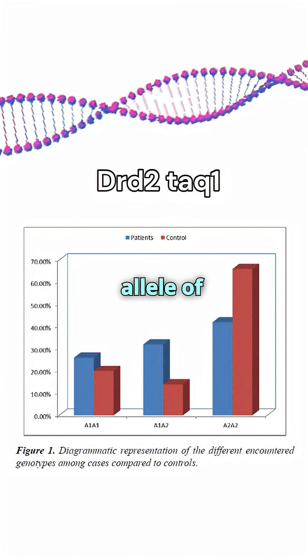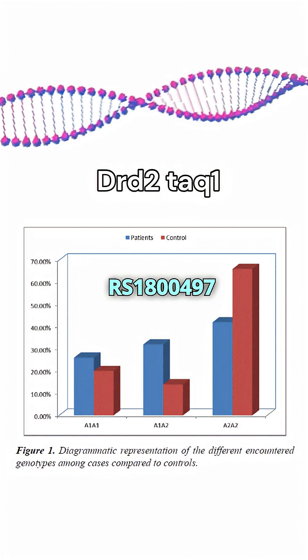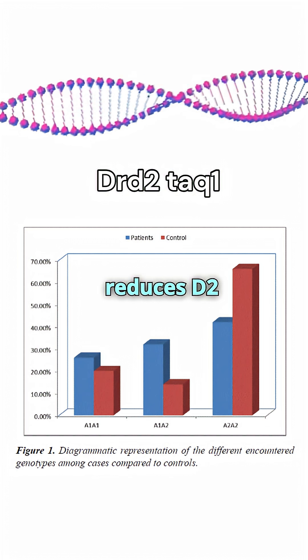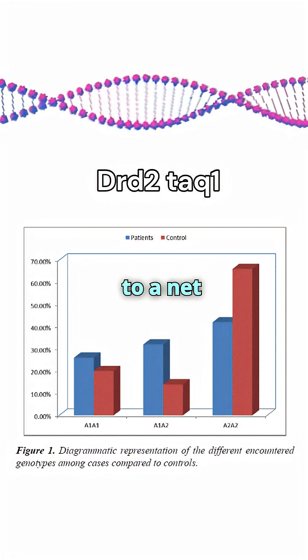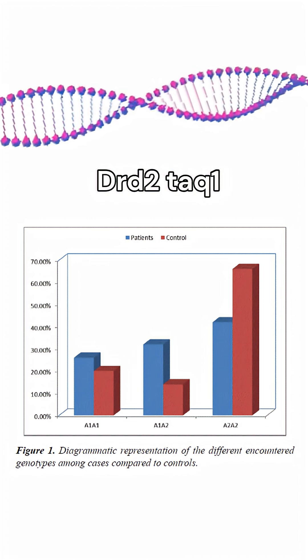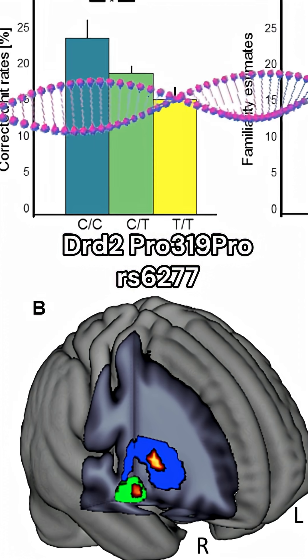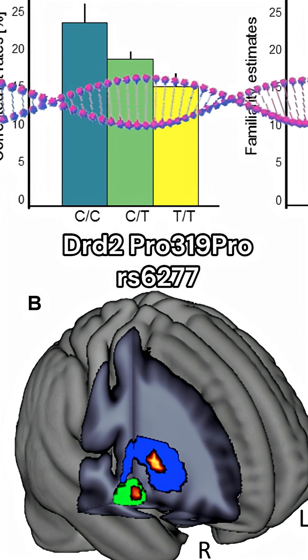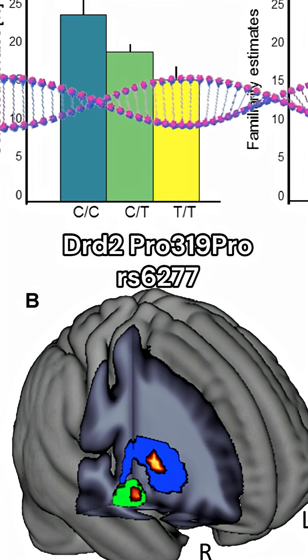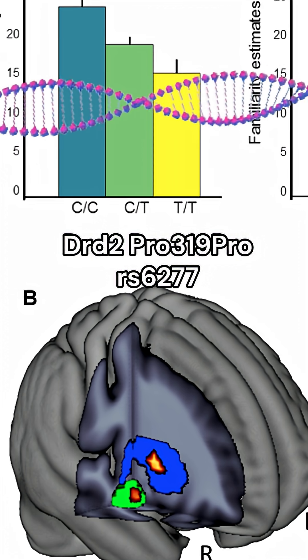Here's the kicker: the A allele of RS-1800497 reduces D2 receptor density by about 20% per copy, leading to a net reduction in dopamine receptor availability. On the other hand, the G allele of RS-6277 is associated with increased dopamine receptor density, though the exact percentage isn't fully quantified.